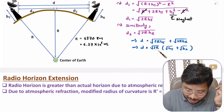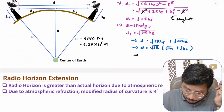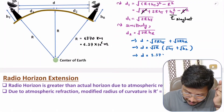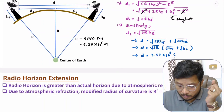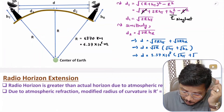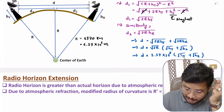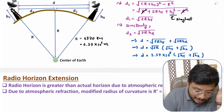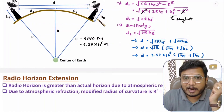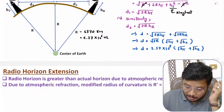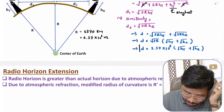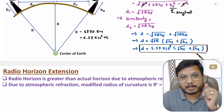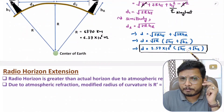Substituting the value of R into the equation gives the maximum possible propagation distance: d equals 3.57 × 10³ times (square root of ht plus square root of hr), where ht is the height of the transmitting antenna in meters and hr is the height of the receiving antenna in meters. This equation gives the maximum distance for space wave propagation.